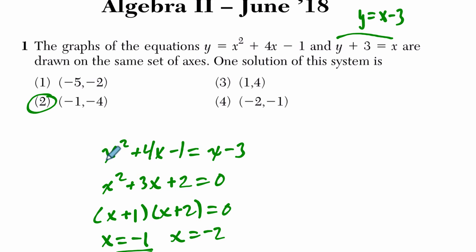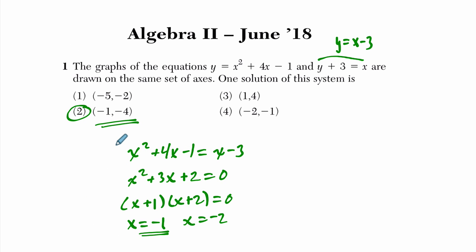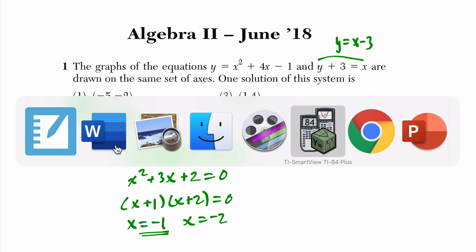I can also plug in negative 1 here. Negative 1 squared is 1, minus 4 is negative 3, minus 1 is negative 4. It's the same thing. There's another point where they meet, but let's look at both here on the calculator.